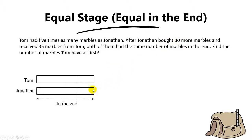Now let's work backwards. Since Jonathan bought 30 more marbles, to work backwards you need to minus away 30 marbles for Jonathan — shade this part away. Remember, you're working backwards, so when Jonathan bought 30 more marbles, you minus 30 marbles here. You shade here, and here you also cut, but just put 30. You don't change it.